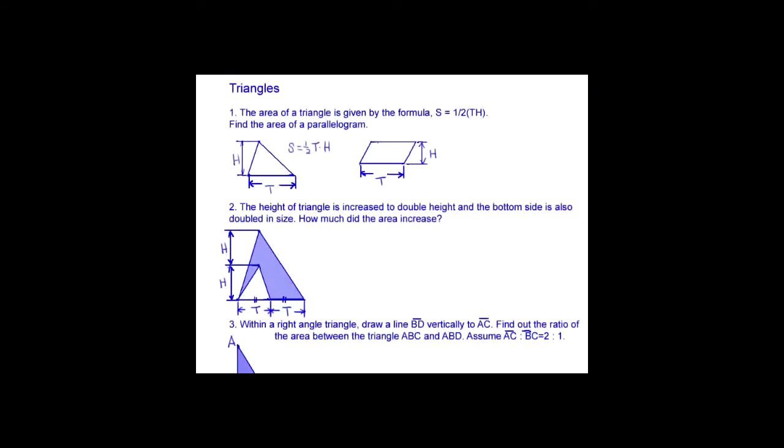Geometry basic. The area of triangle is given by the formula S equals 1 over 2 TH. Find the area of a parallelogram. The parallelogram is divided into two triangles.